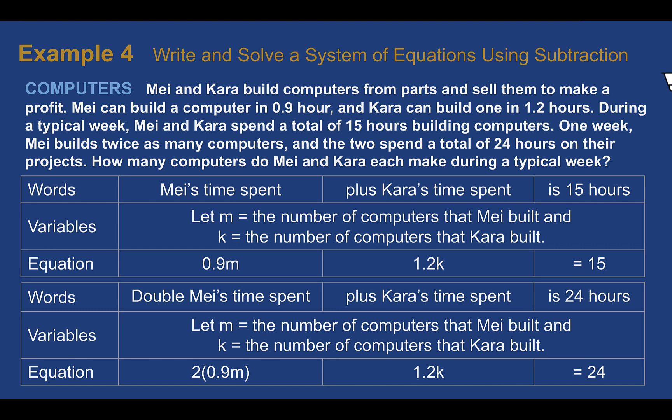Example 4: write and solve a system of equations using subtraction. May and Kara build computers from parts. May can build a computer in 0.9 hours, and Kara in 1.2 hours. During a typical week, they spend a total of 15 hours building. One week, May builds twice as many computers, and together they spend 24 hours. We want to know how many computers each builds during a typical week. Let M be the number May built and K be the number Kara built.